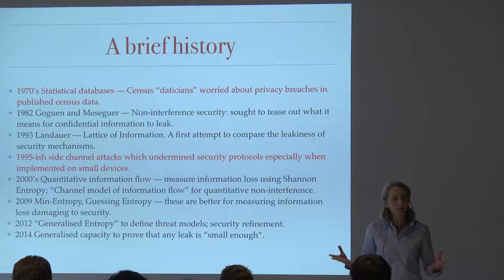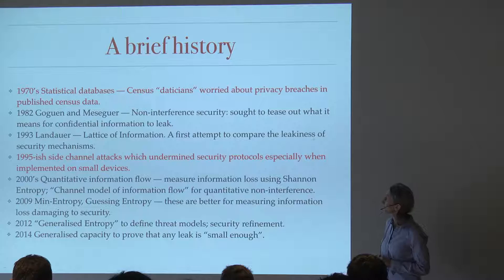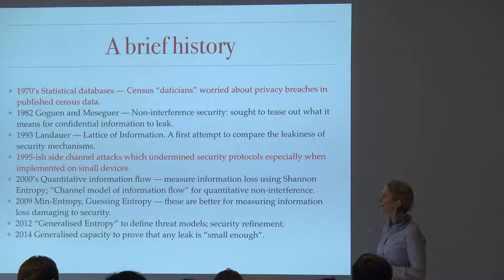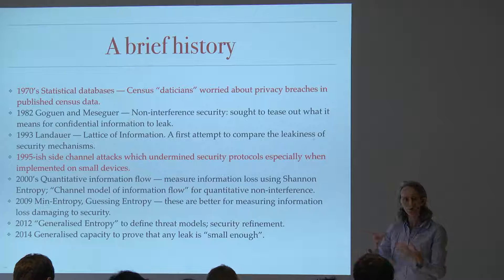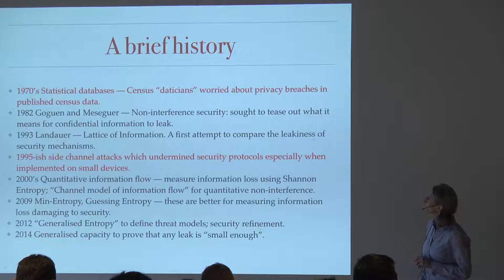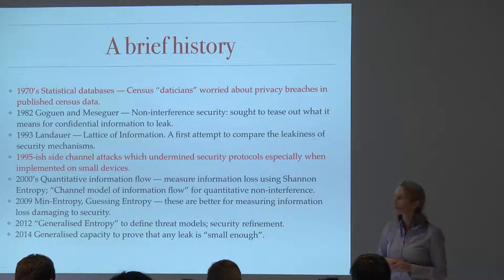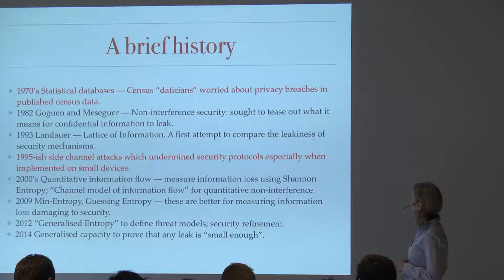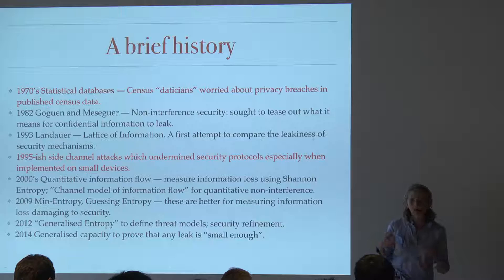People started to worry about privacy breaches in published data. Governments collect statistics about everybody — there's one going on in Australia right now. People were worried about whether the information being released could actually have an effect on individuals or small groups. Then the next big thing in computer science, really in the semantics of security, was around the early 80s where Goguen and Meseguer came up with the formalism of non-interference security.